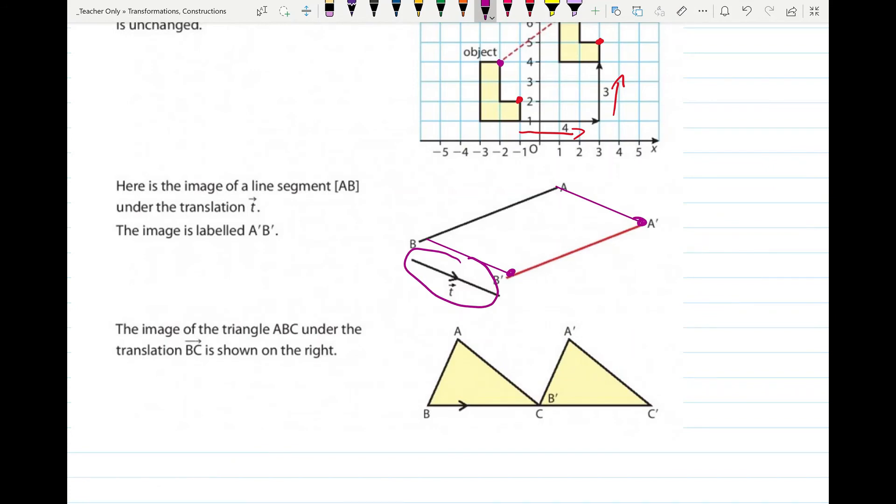And the image is called A dash B dash. So if A was the original point, A dash is the image. If B is the original point, B dash is the image. It's the way of labeling them.